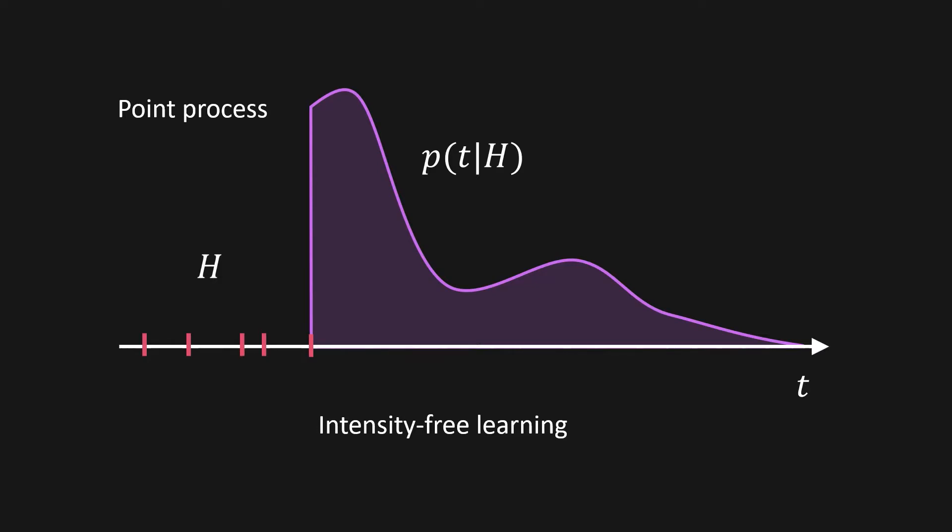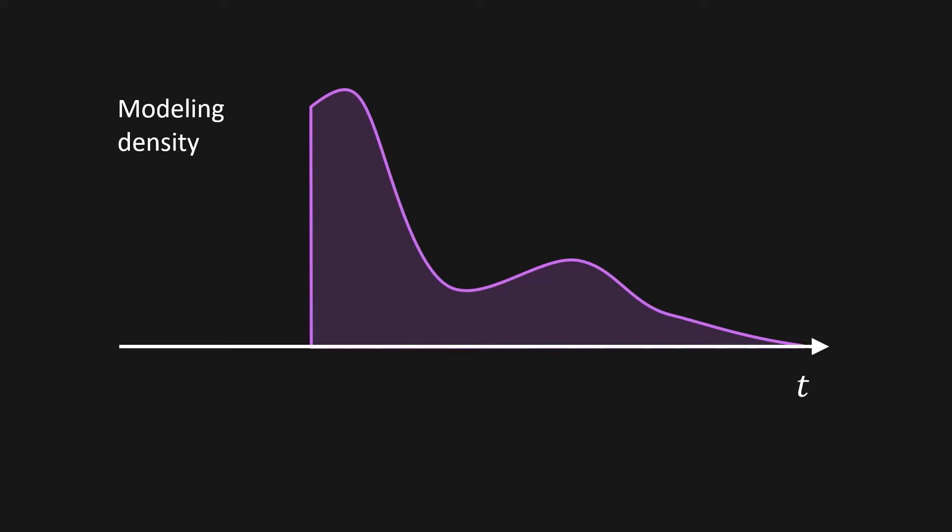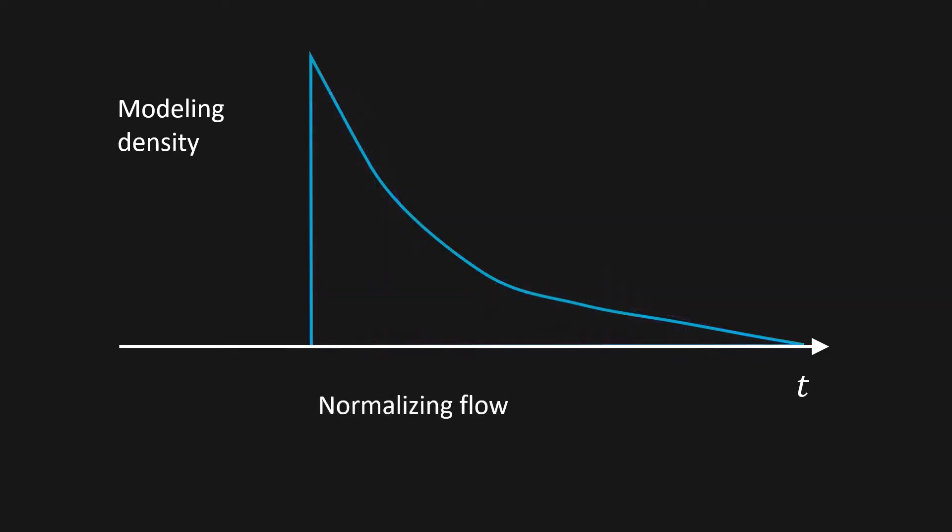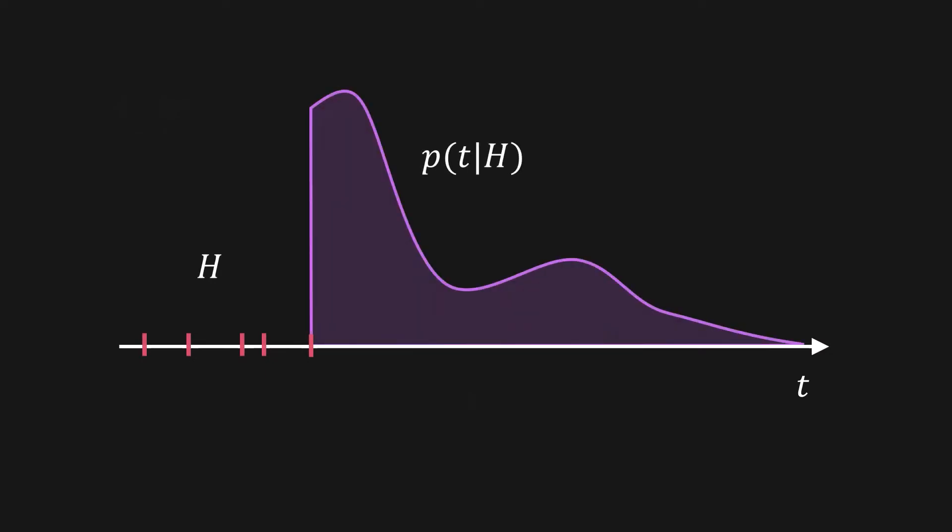To model density we have two straightforward choices: having a mixture of some simple distributions or using normalized flows to transform a simple distribution to a complex one. In the end, our approach processes history with a recurrent neural network and defines a density function for the time until the next event. This works great in practice and can capture very complex behaviors.